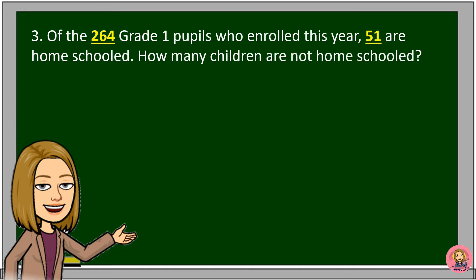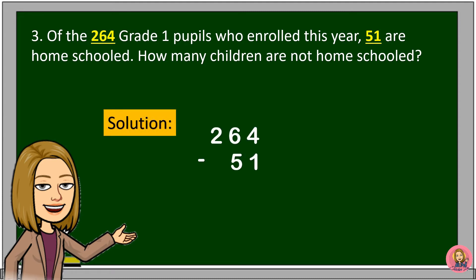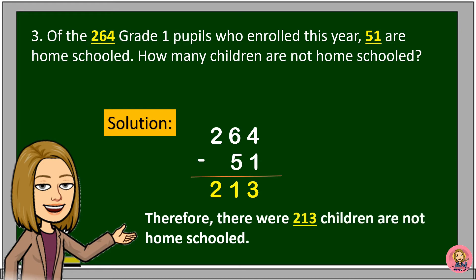Of the 264 grade 1 pupils enrolled this year, 51 are homeschooled. How many children are not homeschooled? We will subtract 51 from 264. 4 minus 1 is equal to 3. 6 minus 5 is equal to 1. Since no digit is being subtracted in the hundreds place, we will bring down the 2. Therefore, 213 children are not homeschooled.